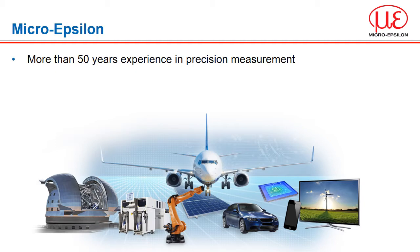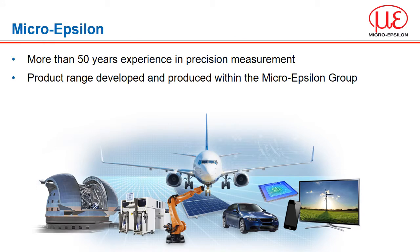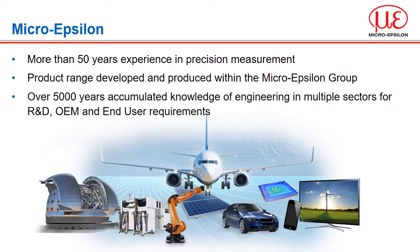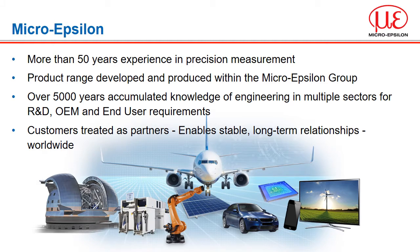From just two people the company has grown to over 1,200 employees. The entire product range is developed and manufactured within the MicroEpsilon group of companies, of which MicroEpsilon UK is one. The organization has been built by engineers and combined we have more than 5,000 years of collective technical knowledge across multiple industrial sectors. One of the keys to our success is that we treat our customers as partners, working with them to ensure stable long-term relationships worldwide.